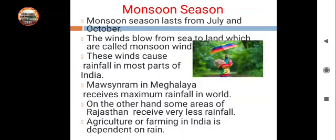In the monsoon season, the wind blows from the sea toward the land. From the Arabian Sea, Bay of Bengal, and the Indian Ocean, the wind starts blowing toward the land. These winds bring a lot of moisture with them, and all the rainfall in India happens because of these winds.